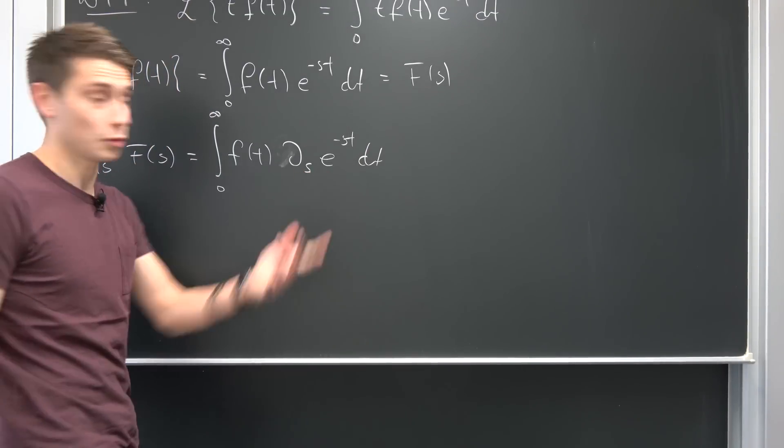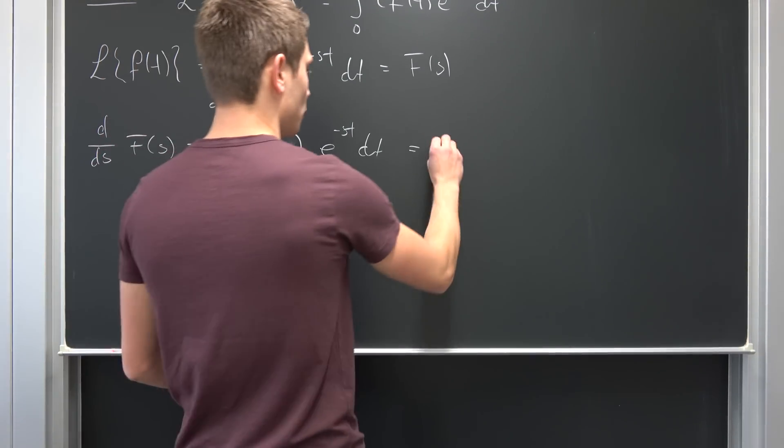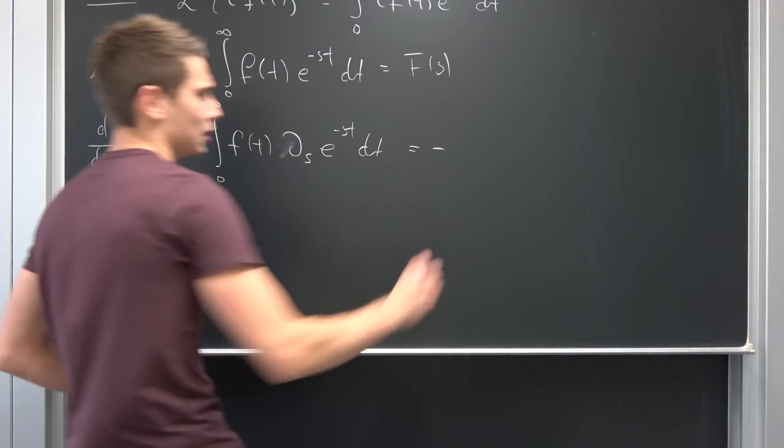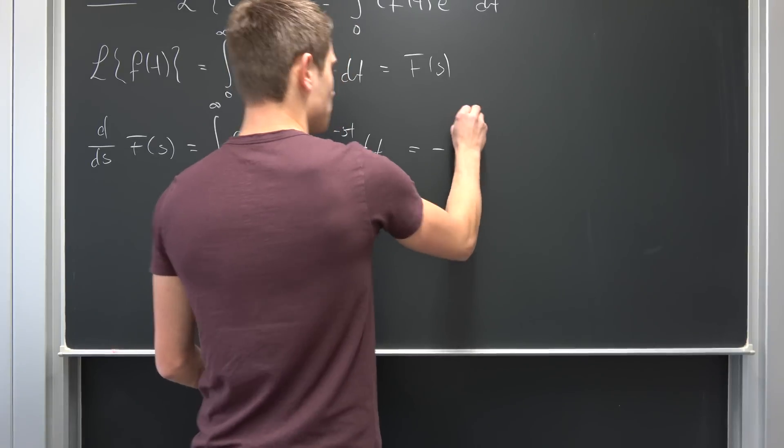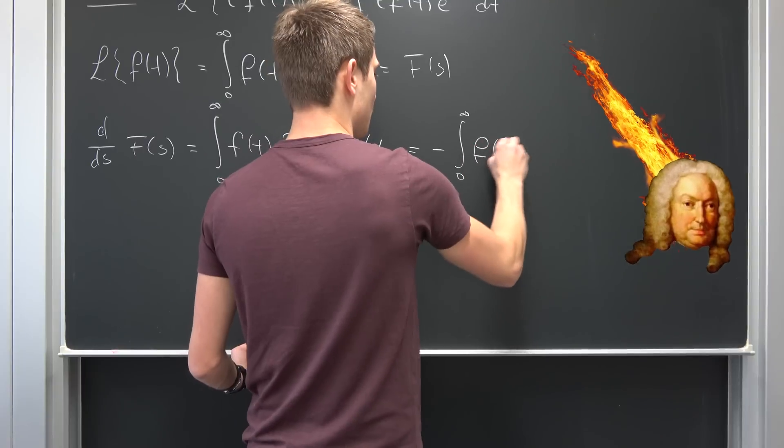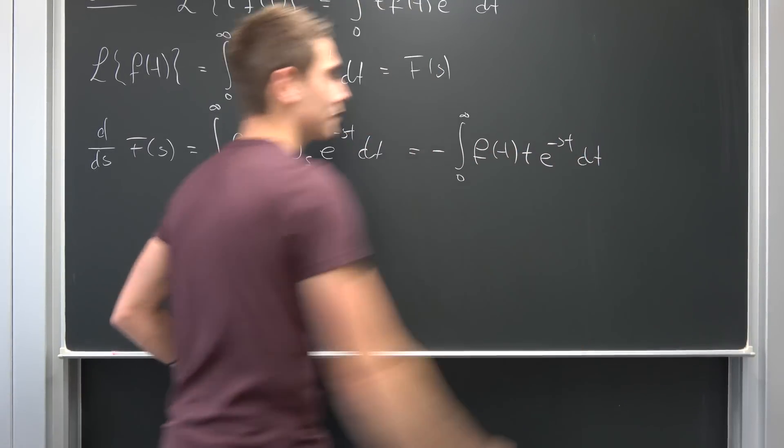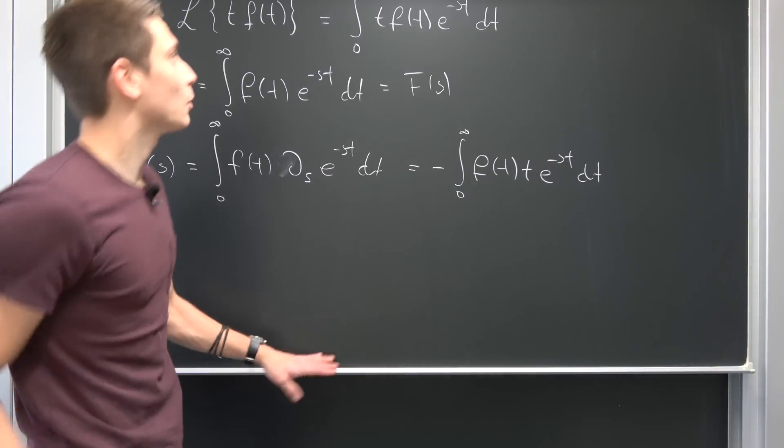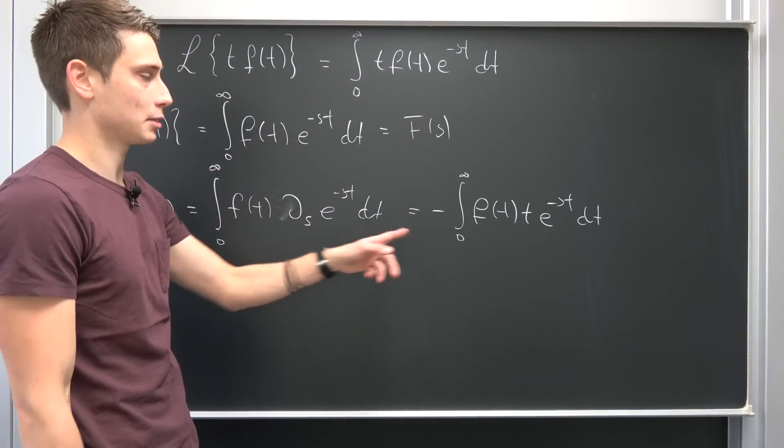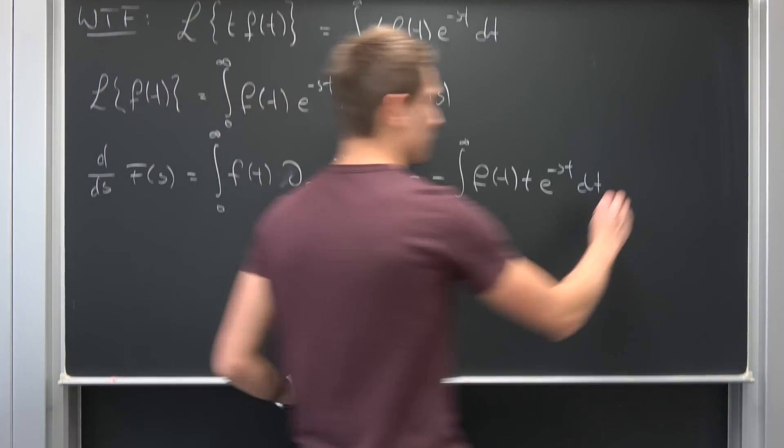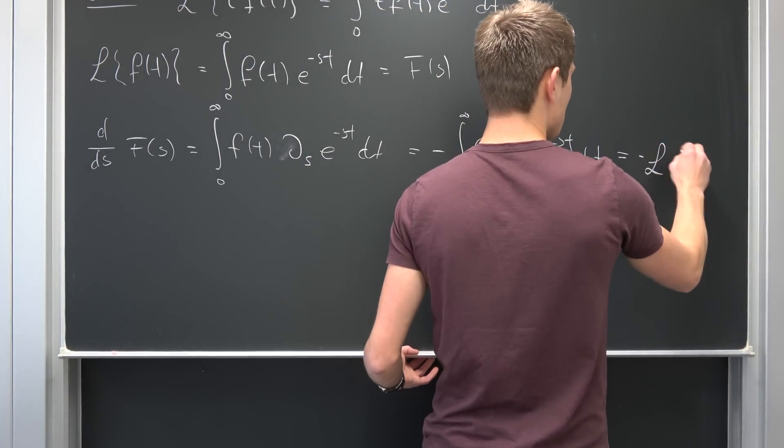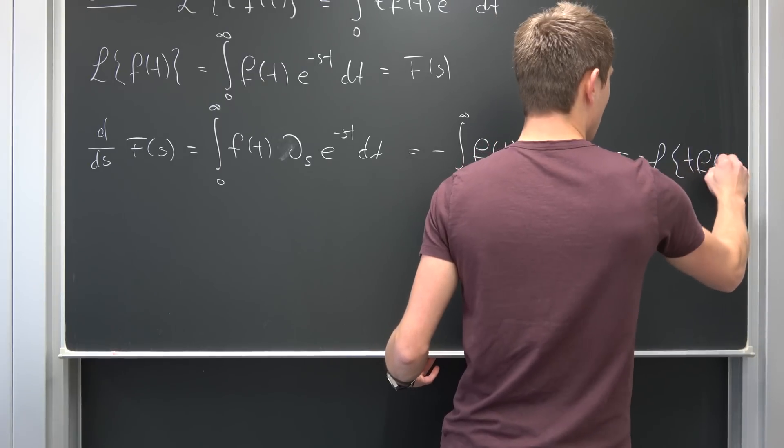Differentiating this is really quite easy. We end up with, bringing the negative to the outside using linearity of the integral, integral from 0 to infinity of f(t)*t*e^(-st) integrated with respect to t. Et voila! This is nothing but this right here with a negative sign. So this is negative Laplace transform of t*f(t).